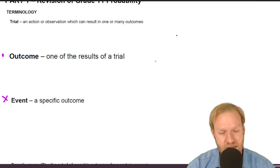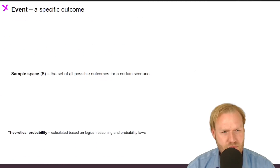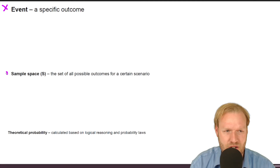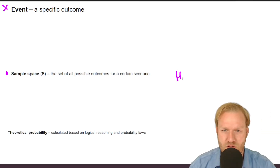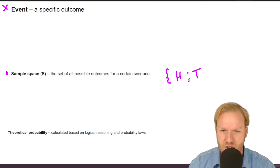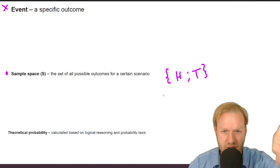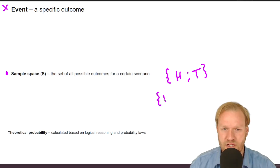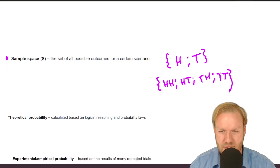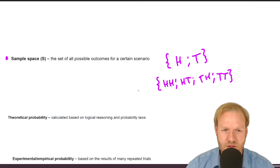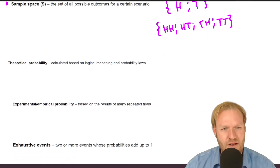The sample space covers all the possible outcomes for a certain scenario. If we're flipping a coin just once, it could be heads or tails — that's our sample space. If we're flipping it twice, we'd have heads-heads, heads-tails, tails-heads, or tails-tails. That's our complete sample space.